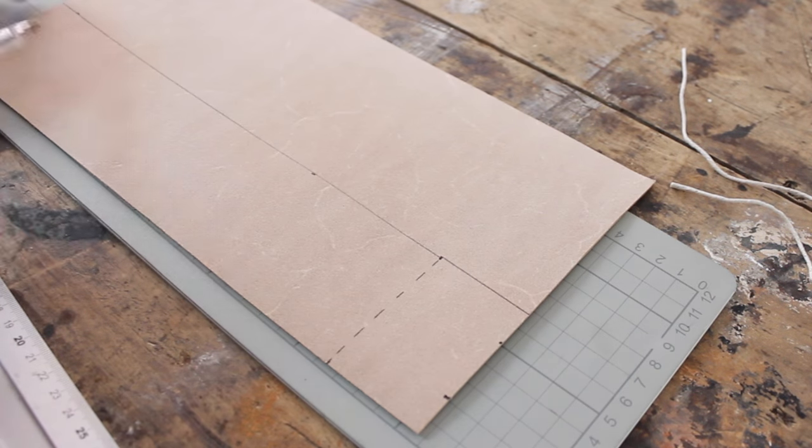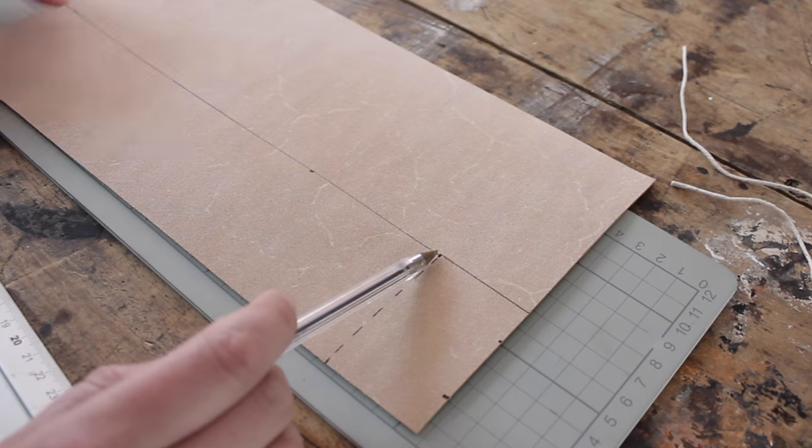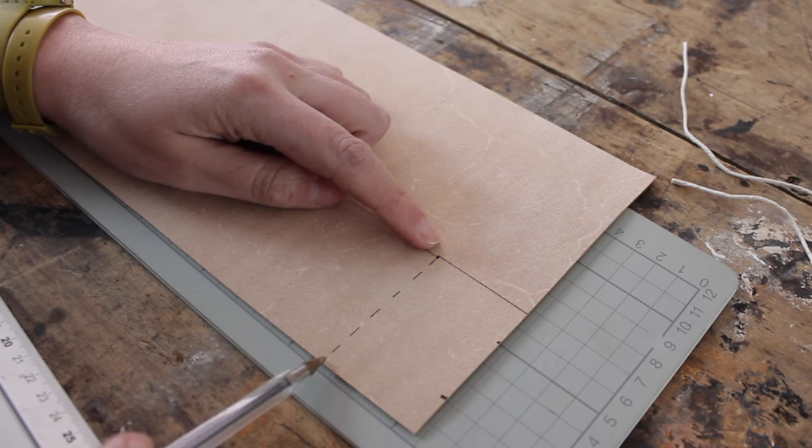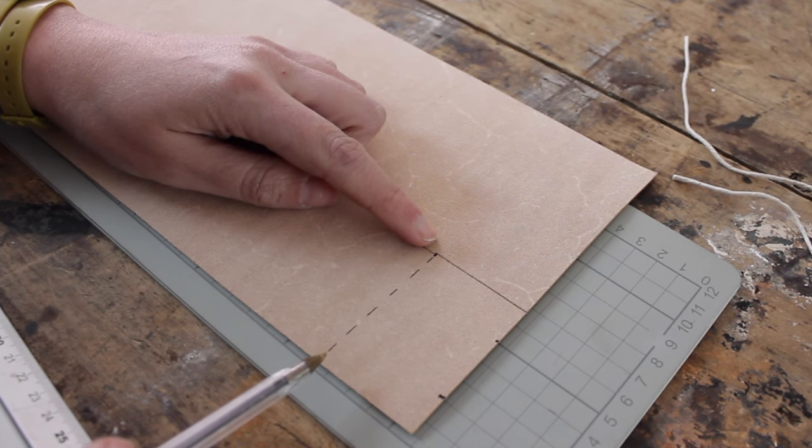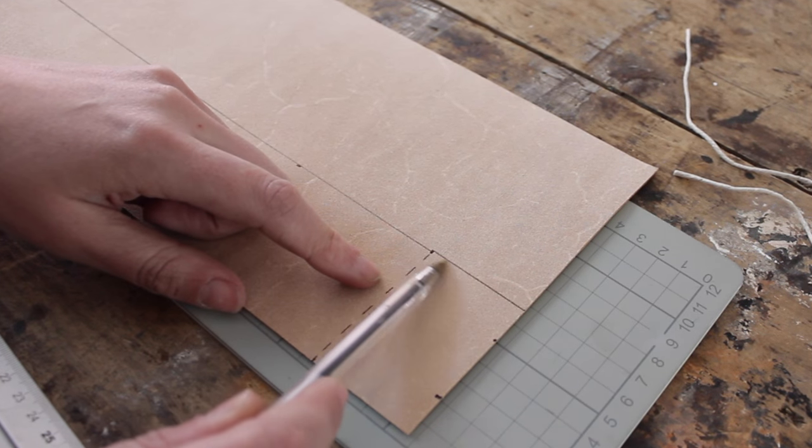So on the back of my leather I drew out my 26 centimeters and my six centimeters in height. You also need a bit of an overlap, so I gave myself another four centimeters.